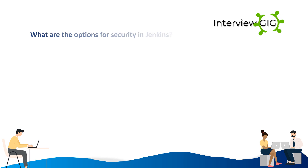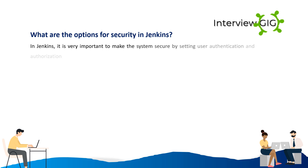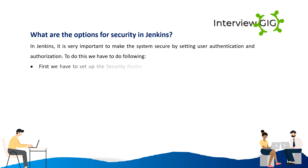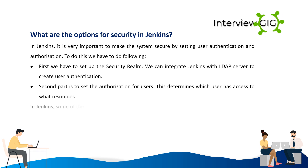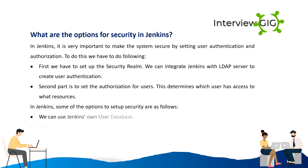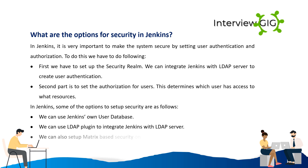For security in Jenkins, it is important to secure the system through user authentication and authorization. First, set up the security realm — we can integrate Jenkins with an LDAP server for user authentication. Second, set authorization to determine which user has access to what resources. Options include using Jenkins' own user database, using the LDAP plugin to integrate with an LDAP server, and setting up matrix-based security on Jenkins.